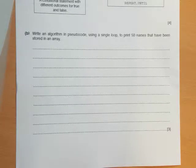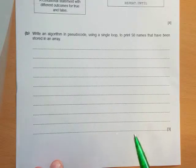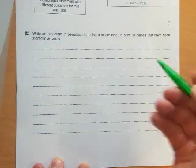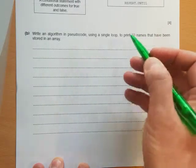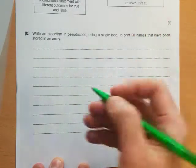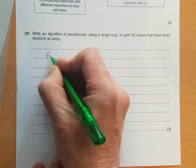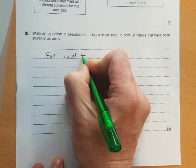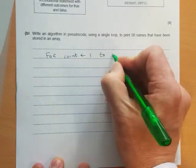So they haven't given us the name of the array, so we can decide what we want to call that. The mark scheme has used 'name' for the name of the array. What we need to do is we need a loop that's going to run 50 times. They've told us how many names there are, so we can set up a for loop: for count equals 1 to 50.